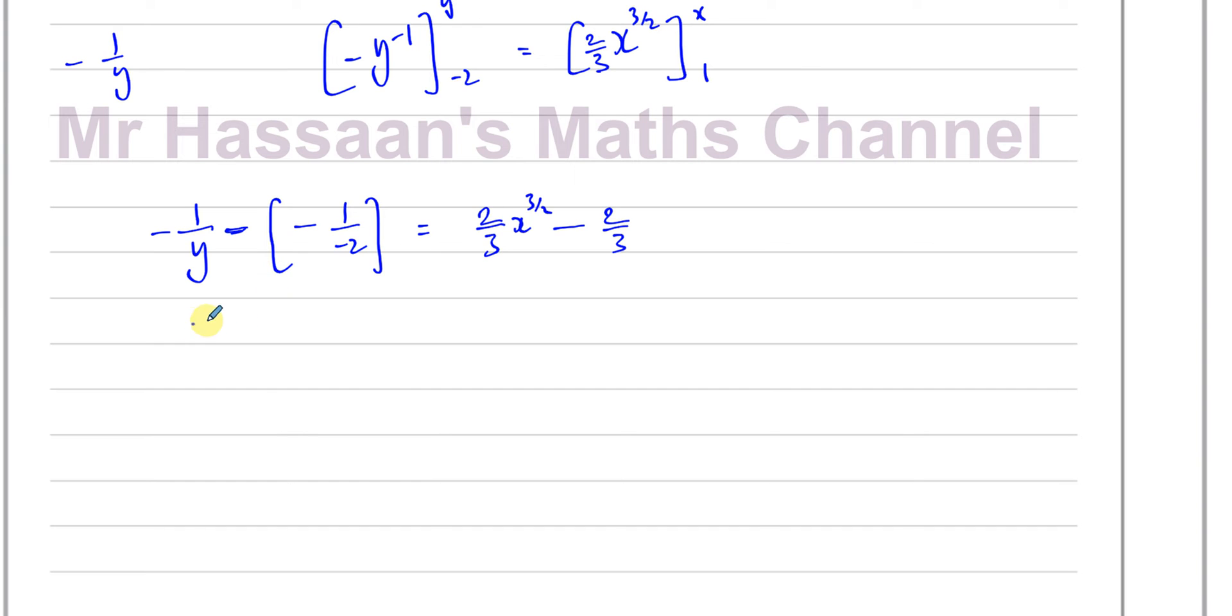Now, I can simplify this. I'm going to make y the subject at the end. But right now you've got minus 1 over y plus, actually it's going to be minus, because this is minus, this would be plus 1 half, so it's going to be minus 1 half. So you have minus 1 half. And this, you can rewrite this as one fraction, because they both have the same denominator. And what I can do now, to make life easier, to get rid of the fractions, I can multiply both sides by 6. If I do that, I'll end up with minus 6 over y, and minus 3 equals, if I multiply this by 6, I'm going to end up with the 3 and the 6 canceling, leaving me with 2 times, 2x to the power of 3 over 2, minus 4.